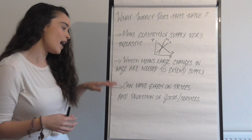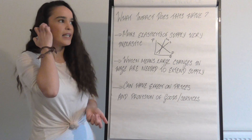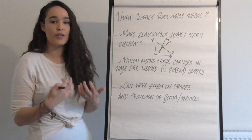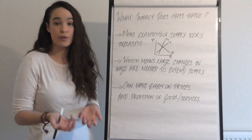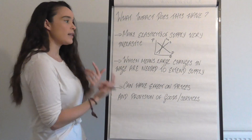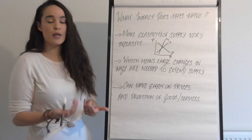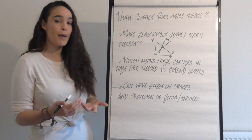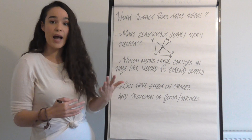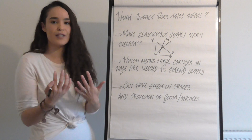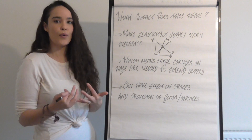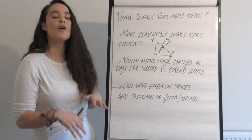This also has a knock-on effect on prices. Because labour is a derived demand, if the cost of labour is higher it directly affects the cost and provision of goods and services. Labour is a cost of production, so if supply is inelastic you need a more-than-proportional change in wage to get more human capital, which increases marginal and average costs, changing your profit-maximising position and forcing you to charge more.